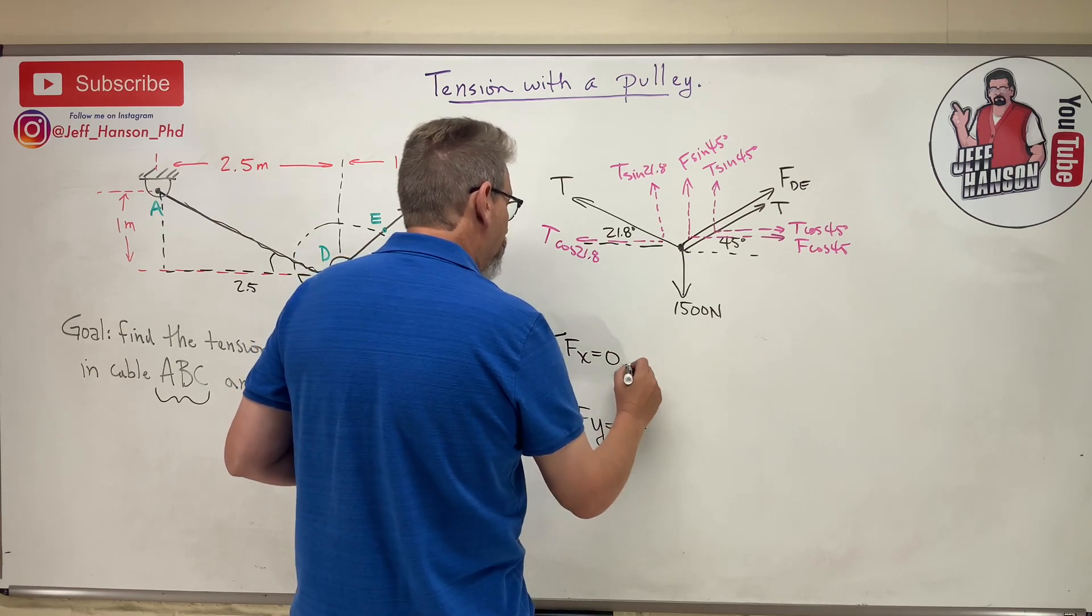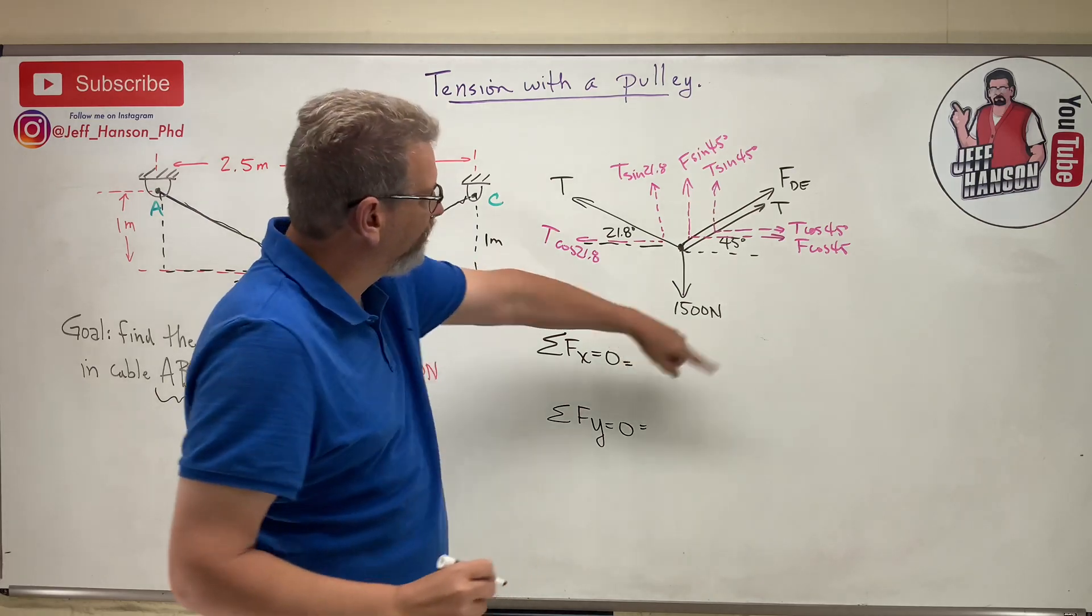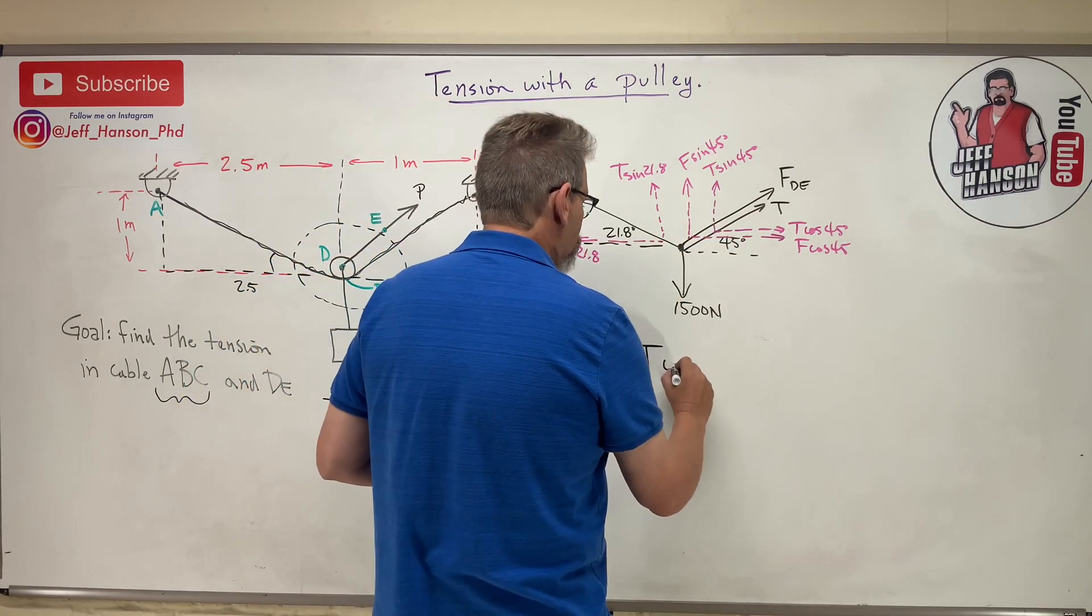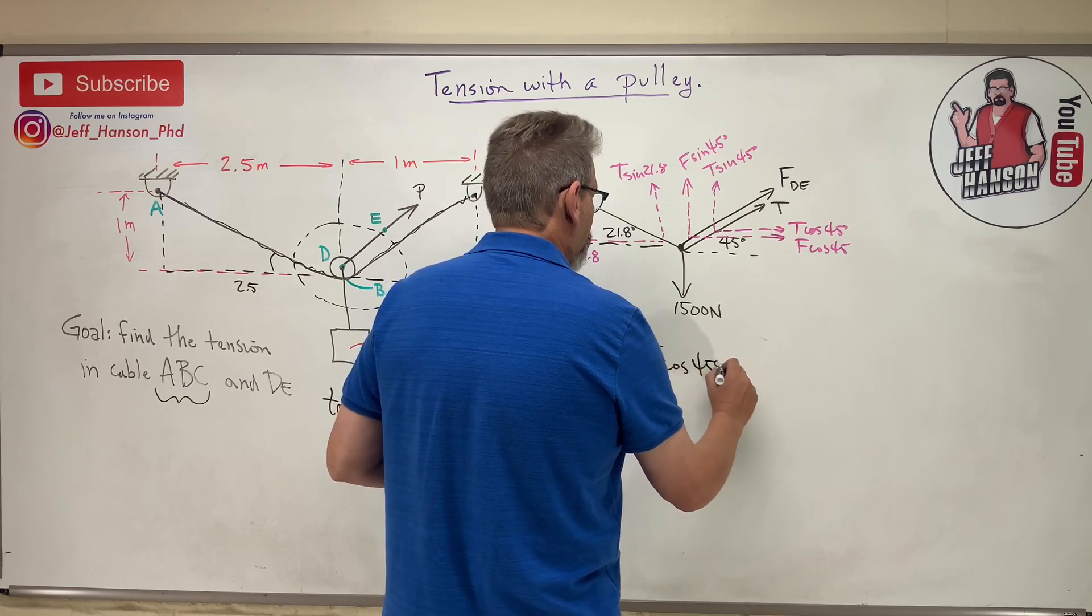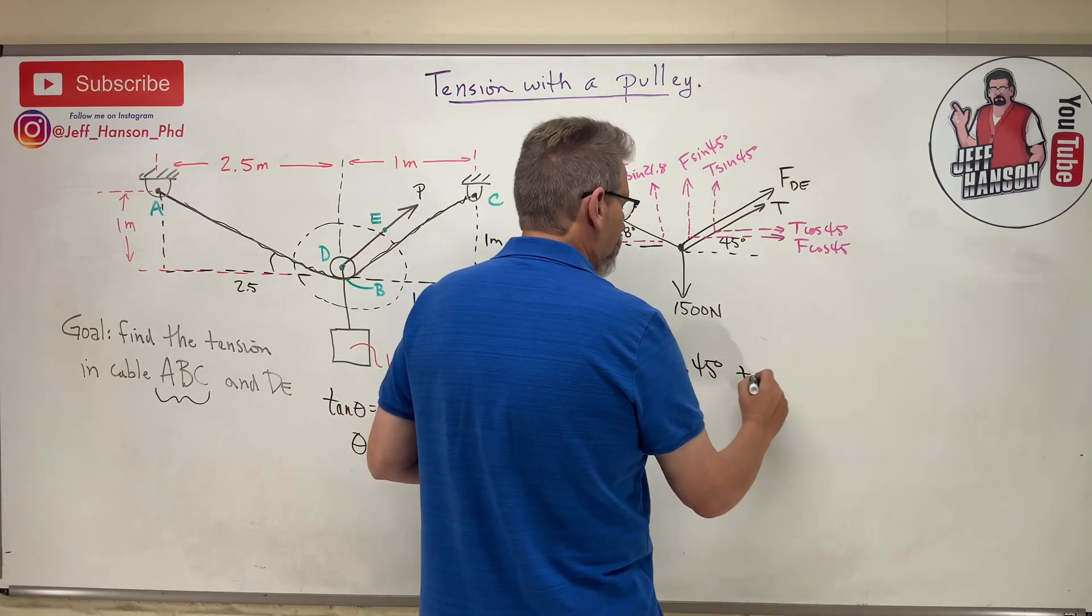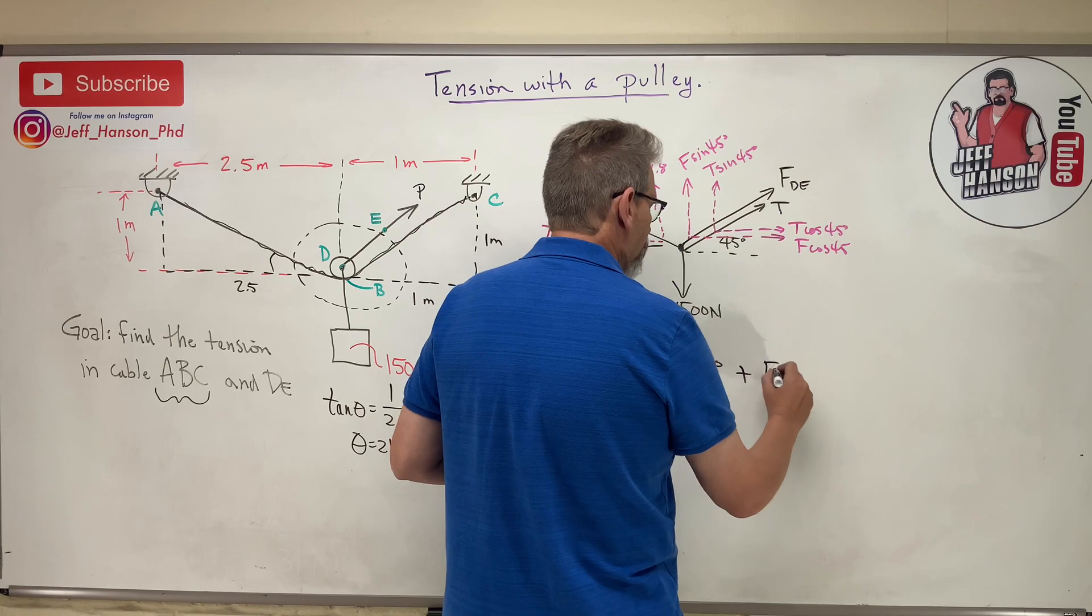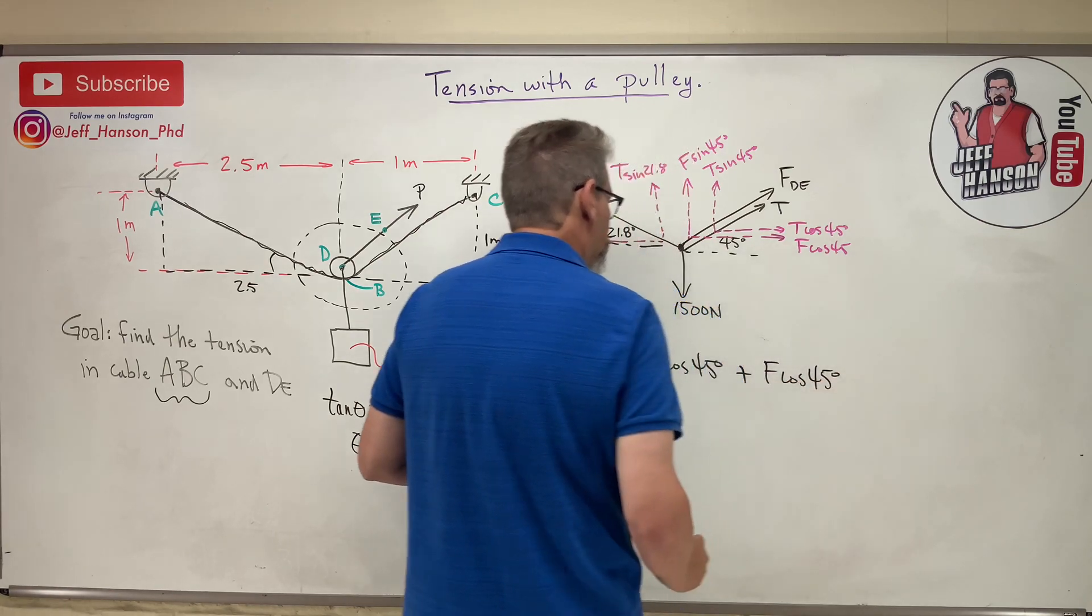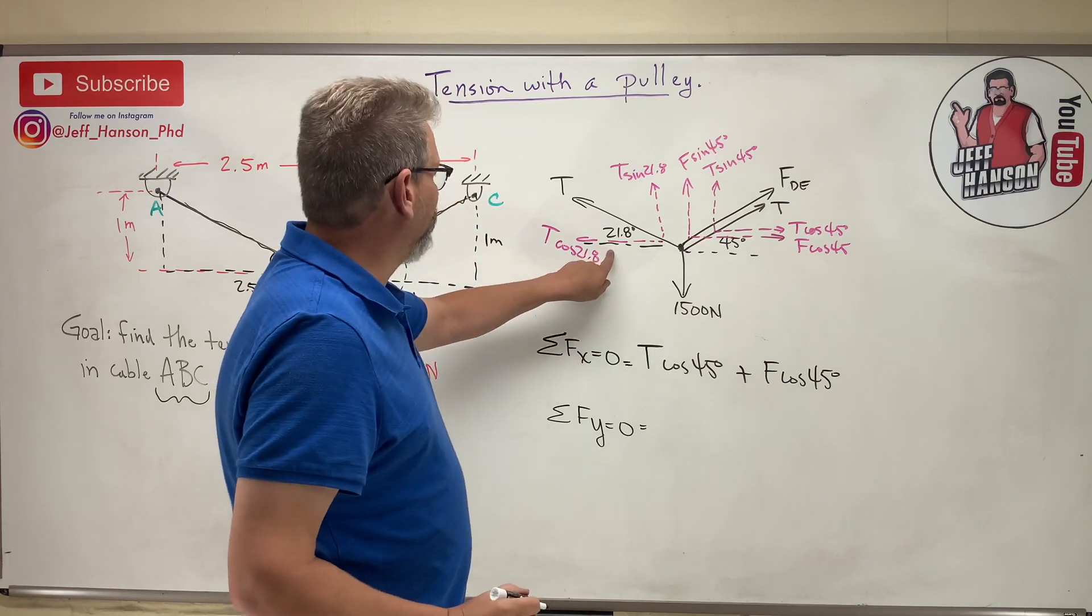Here we go, let's do the x first. I'm gonna do the positive ones first - I'm gonna do those two guys: T cos 45 plus F cos 45. Is there anything else? Oh yeah, this guy over here is in the negative x, this guy. So minus T cos 21.8.